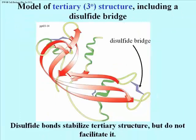Here's our three-dimensional model of a polypeptide showing the tertiary structure, including some disulfide bridges. I can count one, two, three, four of them here. The one I'm pointing to is actually linking two bits of random coil in this polypeptide. But as you can see, disulfide bridges will form whenever cysteines in two different regions of the polypeptide get close enough together.